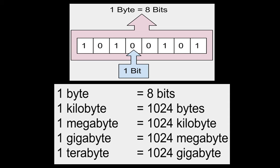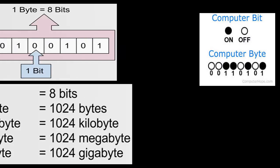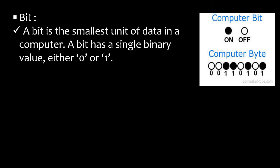Here you can see some diagrams. There are total eight numbers in the box, so one number equals one bit, and one byte equals eight bits. The table shows: one kilobyte equals 1024 bytes, one megabyte equals 1024 kilobytes, one gigabyte equals 1024 megabytes, and one terabyte equals 1024 gigabytes.